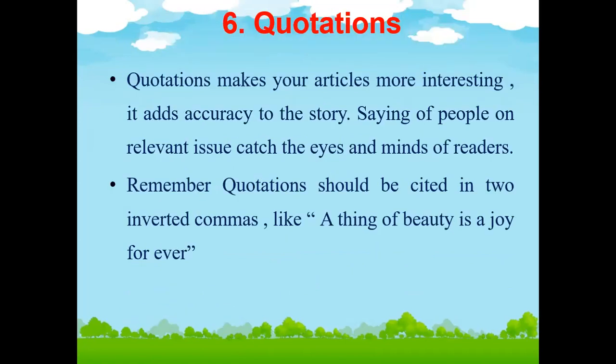Number six: Quotations. Quotations make your article more interesting and add accuracy to the story. Use proper words and relevant quotations. If you are writing an article on education or libraries, your quotation should be from a library context, not just technology or food. Make sure quotations are relevant and similar to the subject. Remember, quotations should be cited in two inverted commas — for example: 'A thing of beauty is a joy forever.'